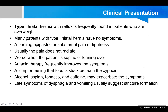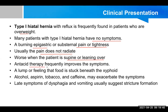When symptoms do occur, they present as a burning epigastric or substernal pain or tightness of the chest. Usually the pain does not radiate. It is worse when the patient is supine or leaning forward, because reflux occurs more easily in those positions. Antacid therapy improves the symptom quite quickly by diluting the acid.